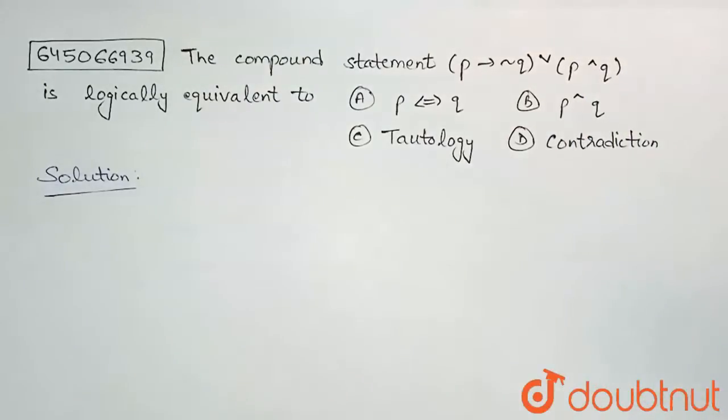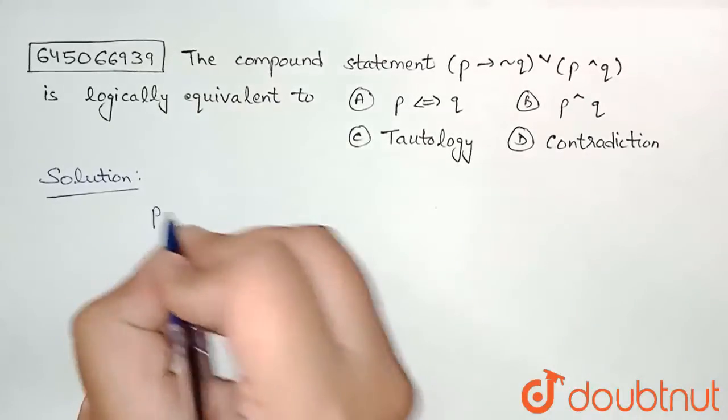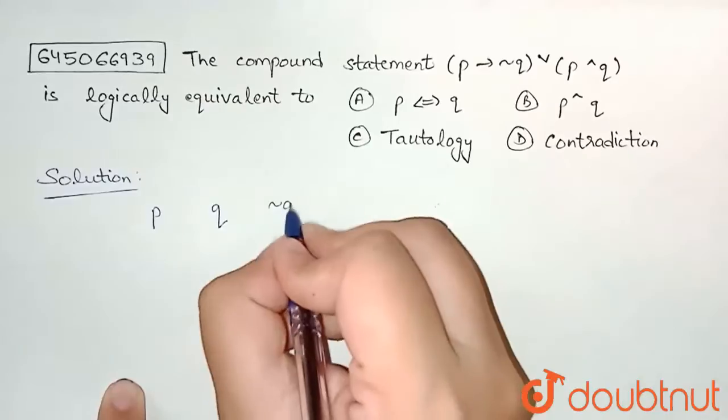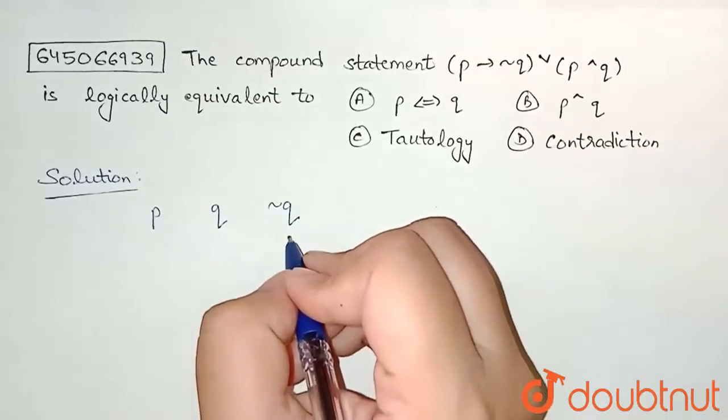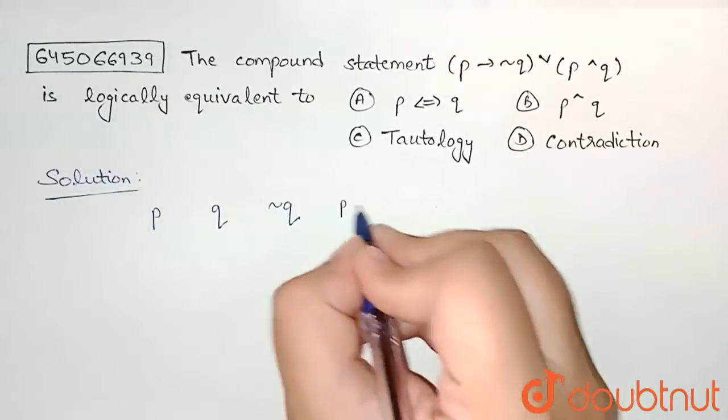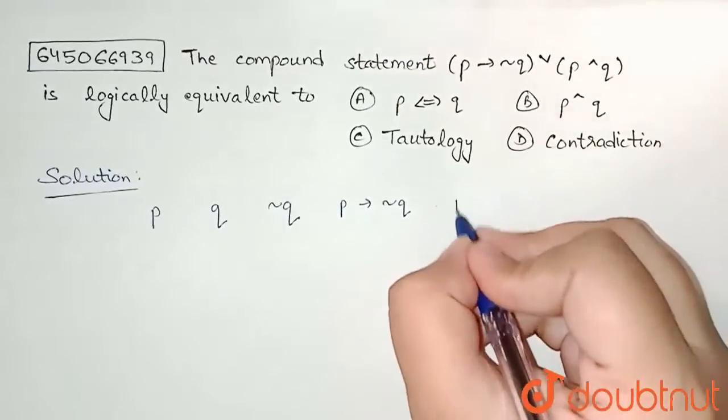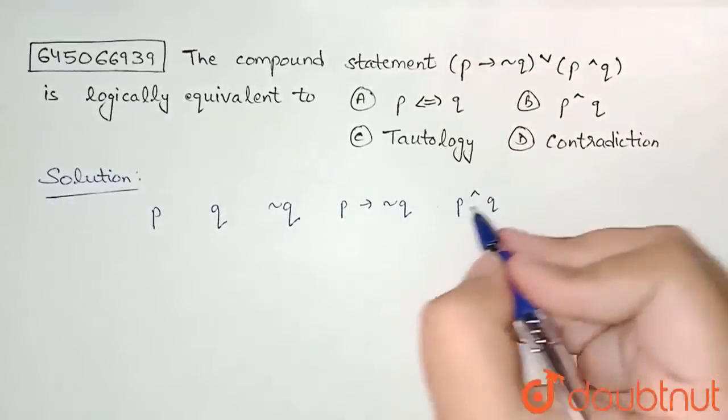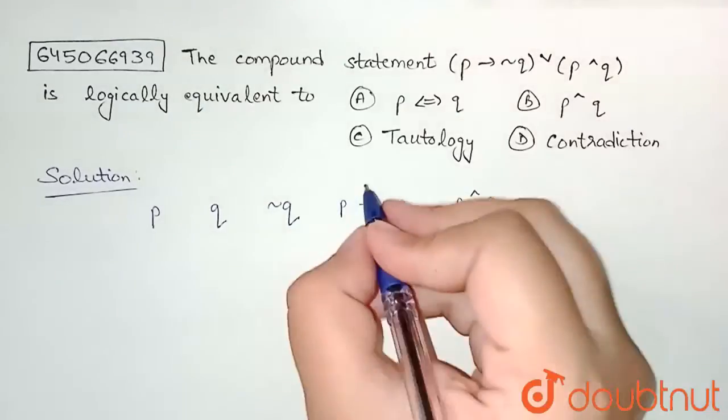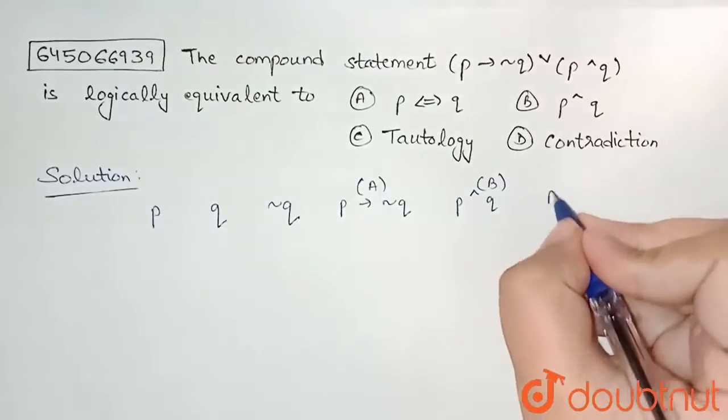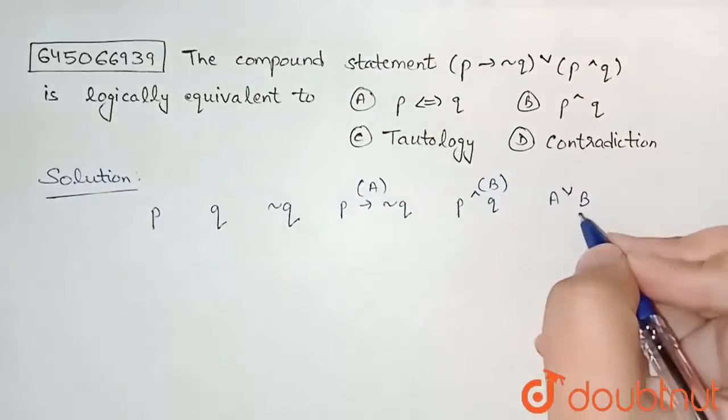We will take p as a column, q as a column, then negation q. We can see p implies negation q, so we will take this as one column. Then we also see p and q. And finally, or of these two. I am considering this as capital A and this is capital B, so we need to find A or B.